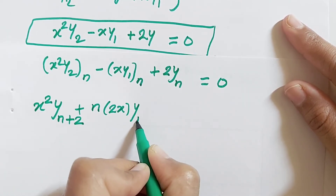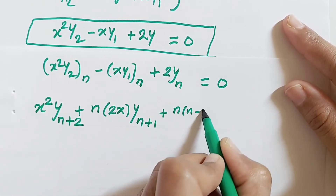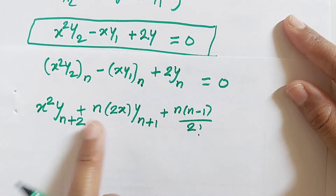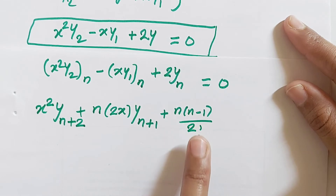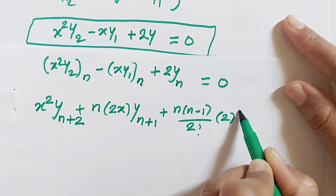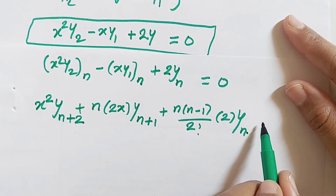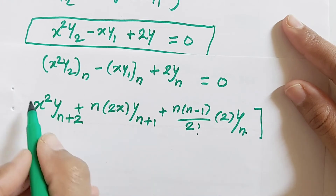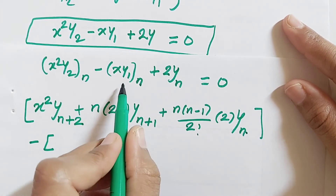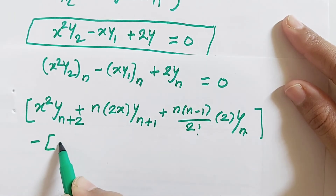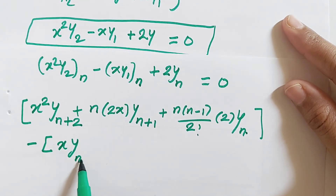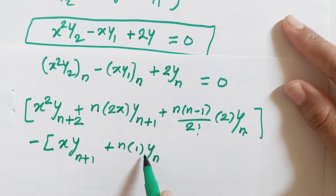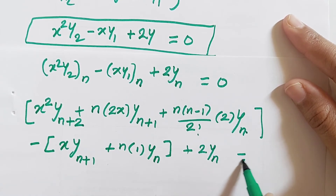The next term is nC1 times the derivative of x², which is 2x, times y_{n+1}. Then nC2 times the derivative of 2x, which is 2, times y_n — where nC2 equals n(n−1)/2. Since the next derivative of 2 is 0, there are no further terms. For the second part, applying the Leibniz rule to minus x·y₁: minus x times y_{n+1} plus minus 1 times y_n. Then plus 2·y_n equals 0.